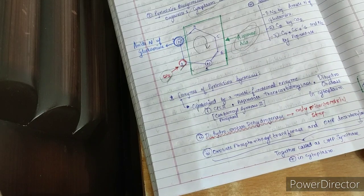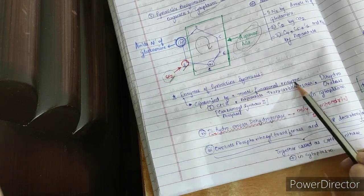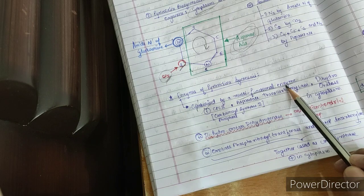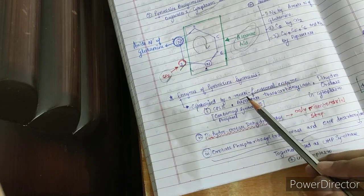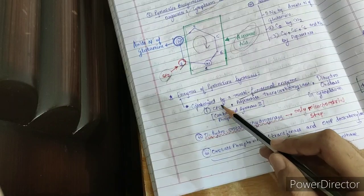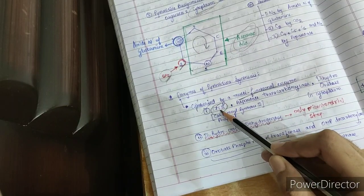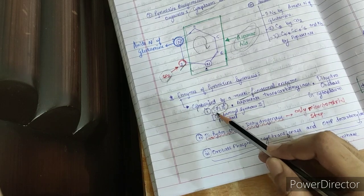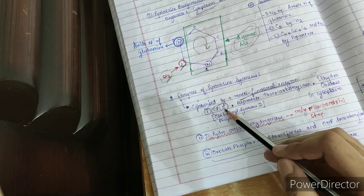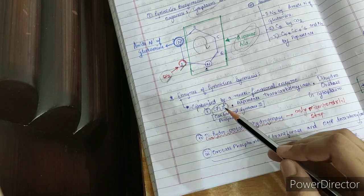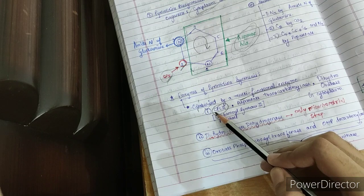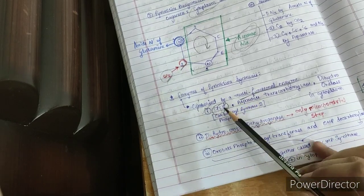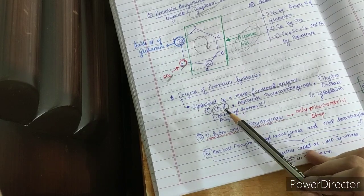Now, regarding the enzymes of pyrimidine synthesis — they are catalyzed by multifunctional enzymes, meaning a single polypeptide chain having multiple enzyme activities. The first is CPS2, carbamoyl phosphate synthase 2, a cytoplasmic enzyme. Compare this to carbamoyl phosphate synthase 1, which is a mitochondrial enzyme involved in the urea cycle. This is the similarity between pyrimidine synthesis and the urea cycle.